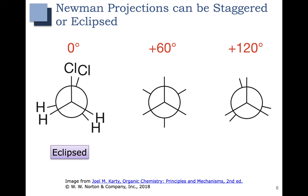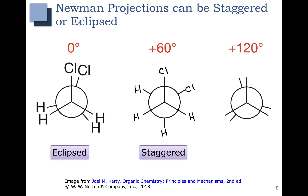As we rotate the groups a little bit, you can see that we can get to a staggered example. The front carbon here is the same, but the back carbon's chlorine was rotated 60 degrees from its original position — so now the chlorine is here and hydrogens down here. This represents a staggered conformation, where we have the maximum distance possible between all of the groups.